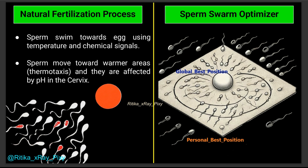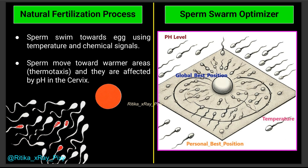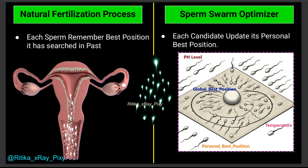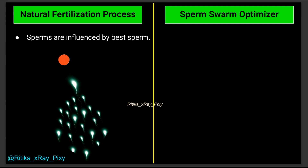In this optimizer, sperm velocity is updated using environmental factors like pH and temperature, and a problem-specific fitness function evaluates how good or bad a solution is — how close or far it is from the optimal solution. Each candidate maintains a personal best position: if the current position has a better fitness score, we update the personal best. The best solution guides other candidates toward the optimal point.